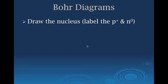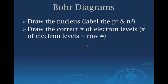First: Bohr diagrams. We don't really use these much in the upper levels of chemistry because beyond about the third row of the periodic table, Bohr diagrams don't really help us visualize anything. But they are good for the first 20 or so elements. The first thing you do is draw the nucleus, then add the correct number of energy levels. The number of energy levels equals whatever row that element is on.